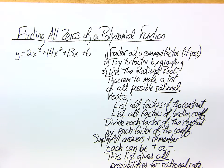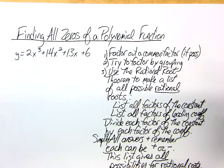Your first step is to factor out a common factor if you have one. In my example, do I have any common factors to take out? No, I don't.